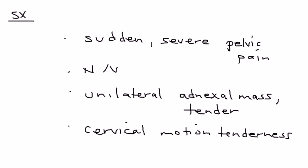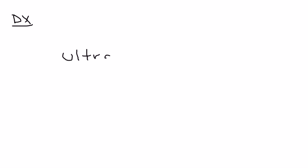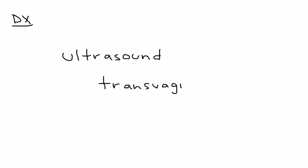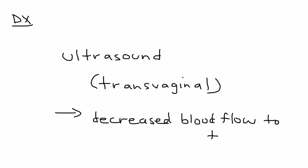In addition, the patient can also have cervical motion tenderness — when you do a vaginal exam and move the cervix with the finger, the patient will have tenderness. For diagnosis, the most important test is an ultrasound, done transvaginally rather than over the abdomen for better results. This ultrasound will show decreased blood flow to the ovary.